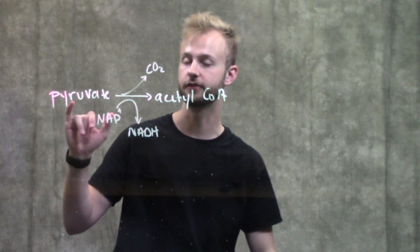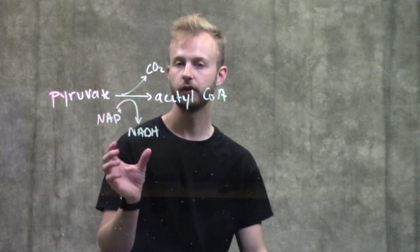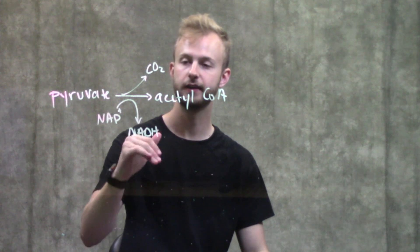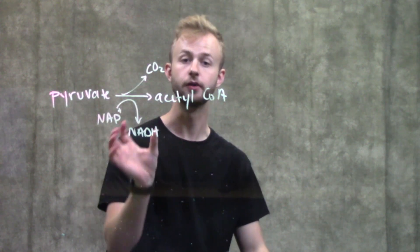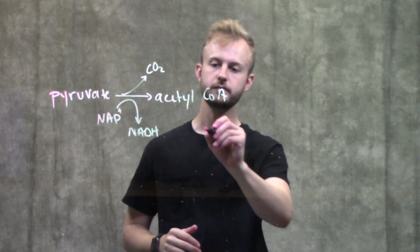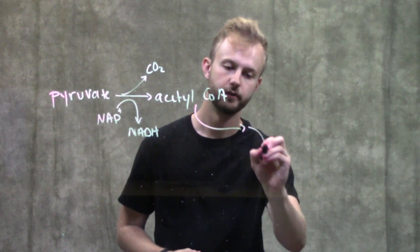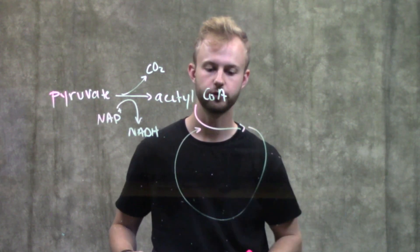But it's important to remember glycolysis gives us two pyruvates. So for one molecule of glucose, we're actually producing two NADHs and two molecules of CO2 in this step. So now this acetyl-CoA will go into the citric acid cycle.